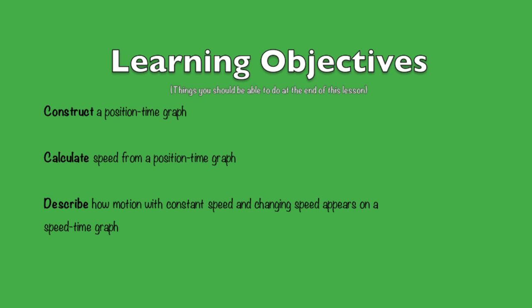The learning objectives, or things you should be able to do at the end of this lesson, are as follows. You should be able to construct a position-time graph, calculate speed from a position-time graph, and describe how motion with constant speed and changing speed appears on a speed-time graph.